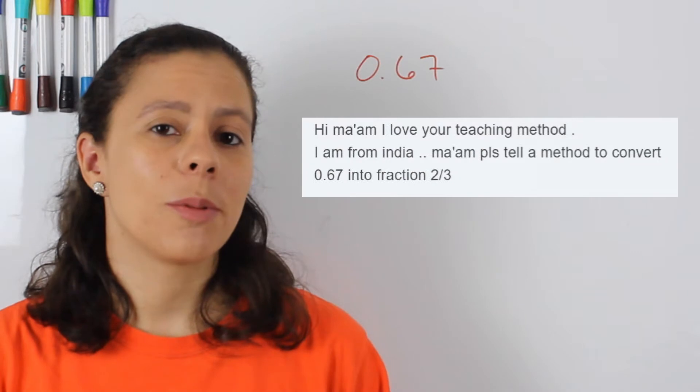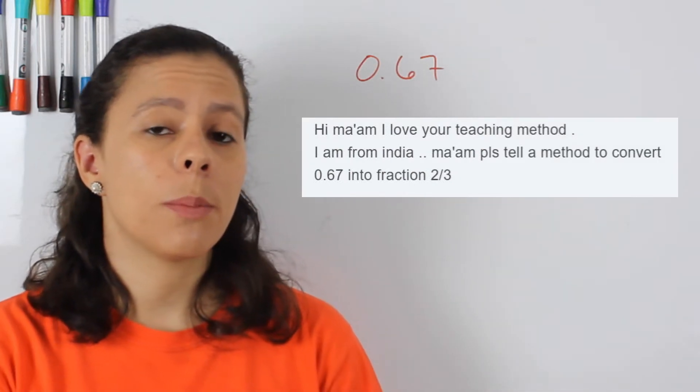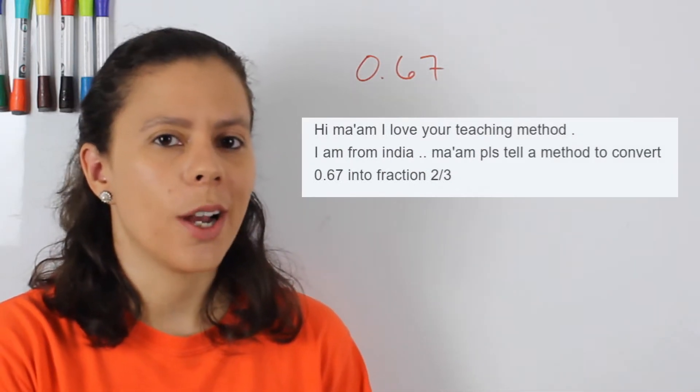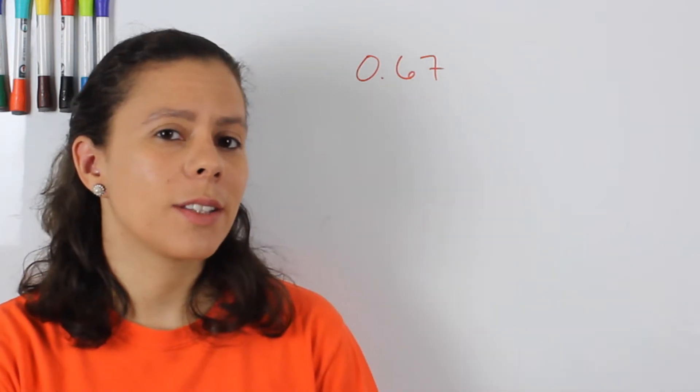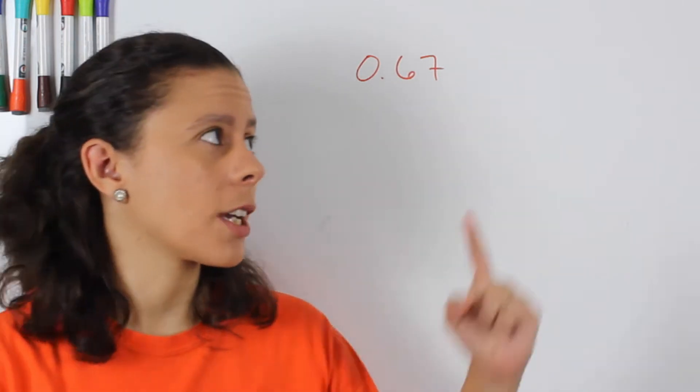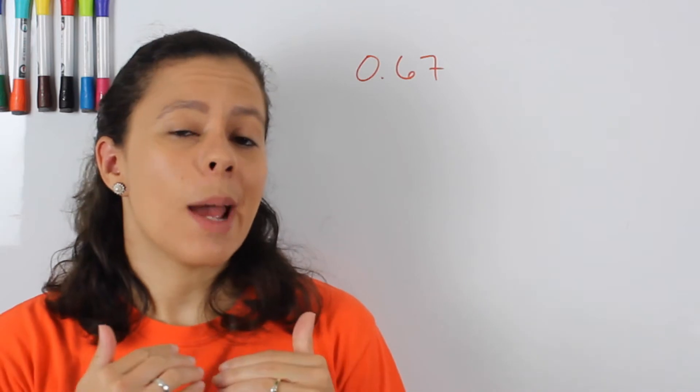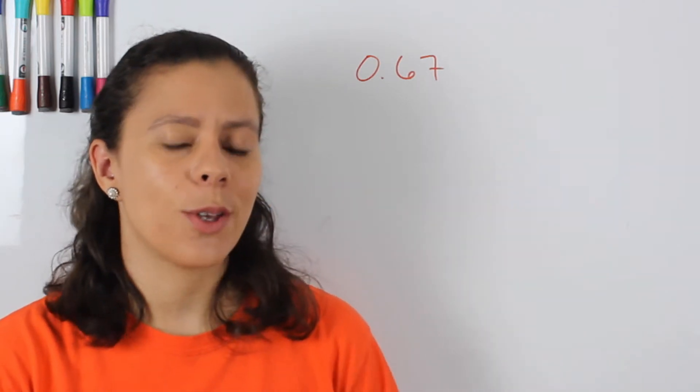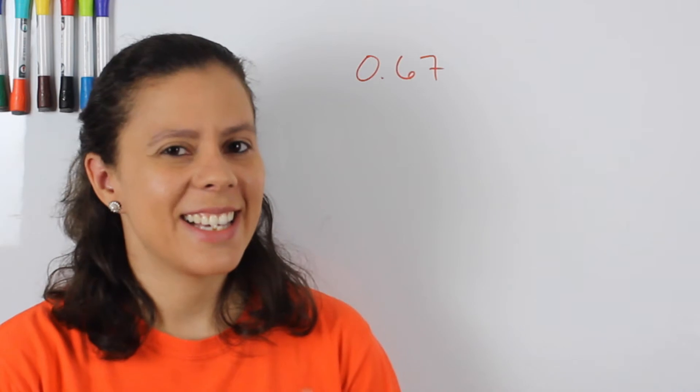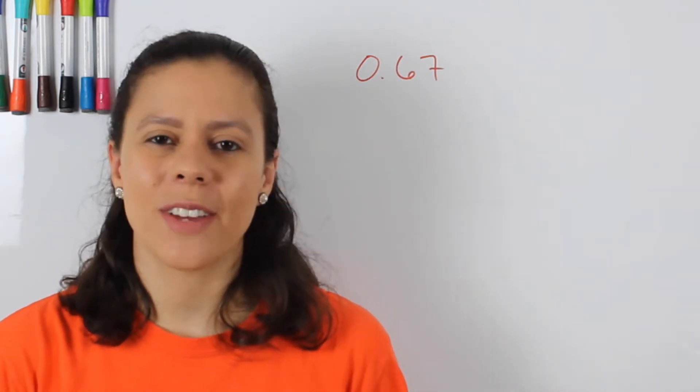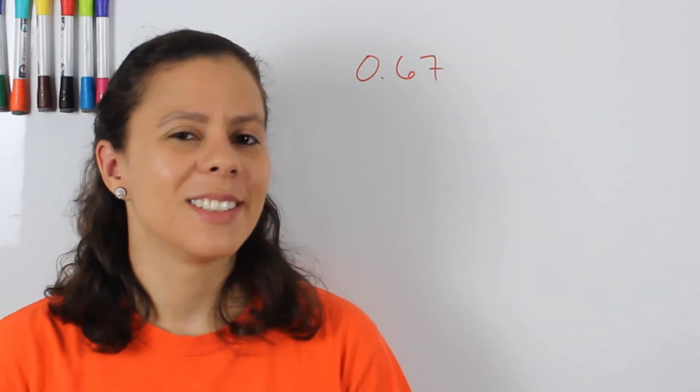I'm making this video because a student asked me, can you please make a video about converting .67 to two-thirds? And I actually explained to that student in another video that you can check out on this card above that .67 is not two-thirds, .6 repeating is two-thirds. And I explained on that video how to go from .6 repeating to two-thirds.